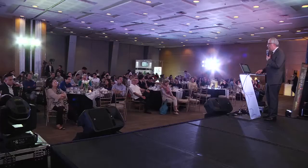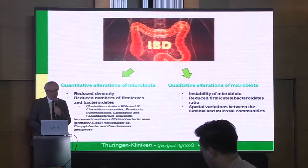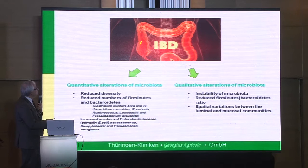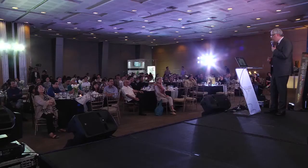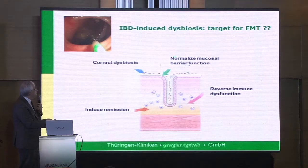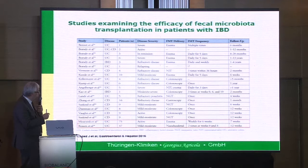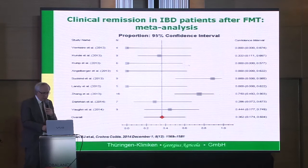What about FMT therapy and inflammatory bowel disease? In Europe and the United States we have a very high number of patients with Crohn's disease or ulcerative colitis. All these patients with IBD have quantitative and qualitative changes — alteration in gut microbiota. The question is: can we reverse it with FMT? The target would be to correct dysbiosis, normalize mucosal barrier function, reverse immune dysfunction, and induce remission. But it is not so easy as in Clostridium difficile. The results are about 35 to 40%.